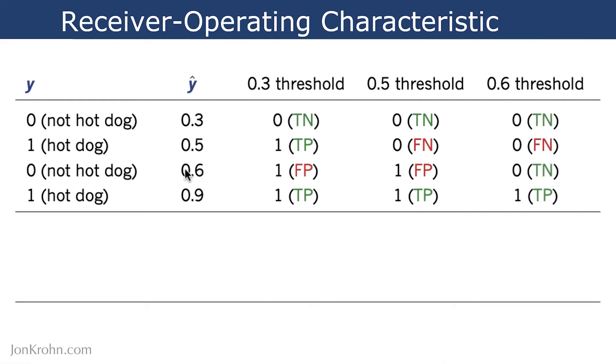Then we do the same thing again as we did at 0.3 and 0.5 for the 0.6 threshold. So now here, anything that is at 0.6 or lower is considered to be not a hot dog, and anything that is above 0.6 is considered to be a hot dog. So now, again,